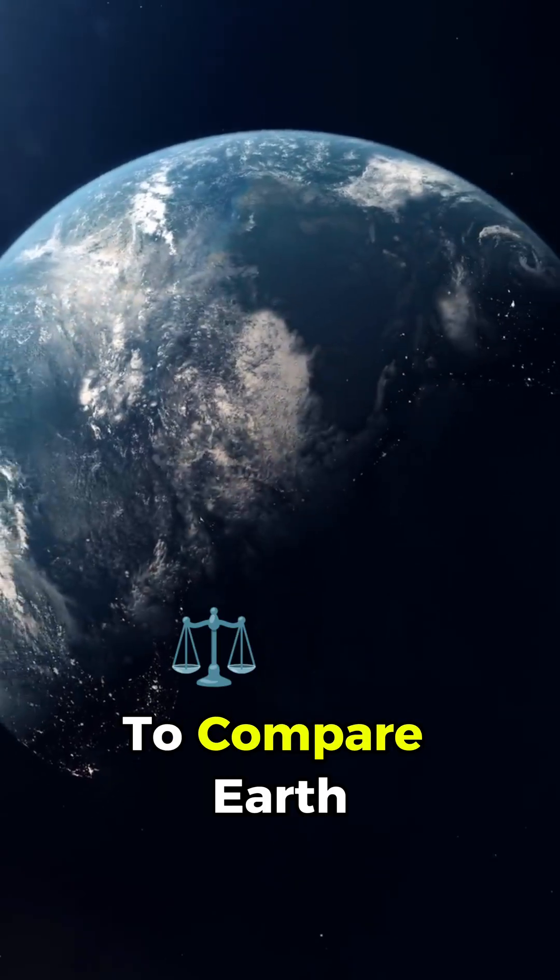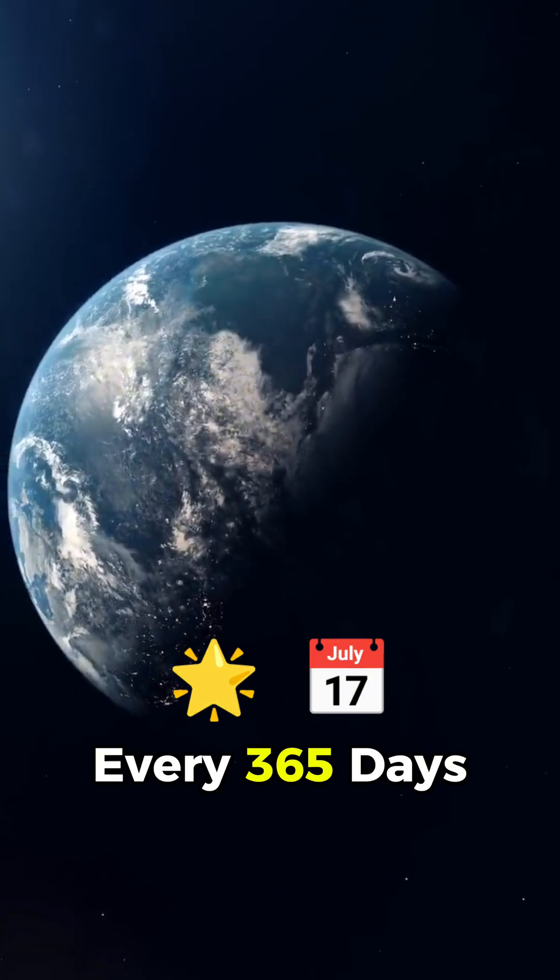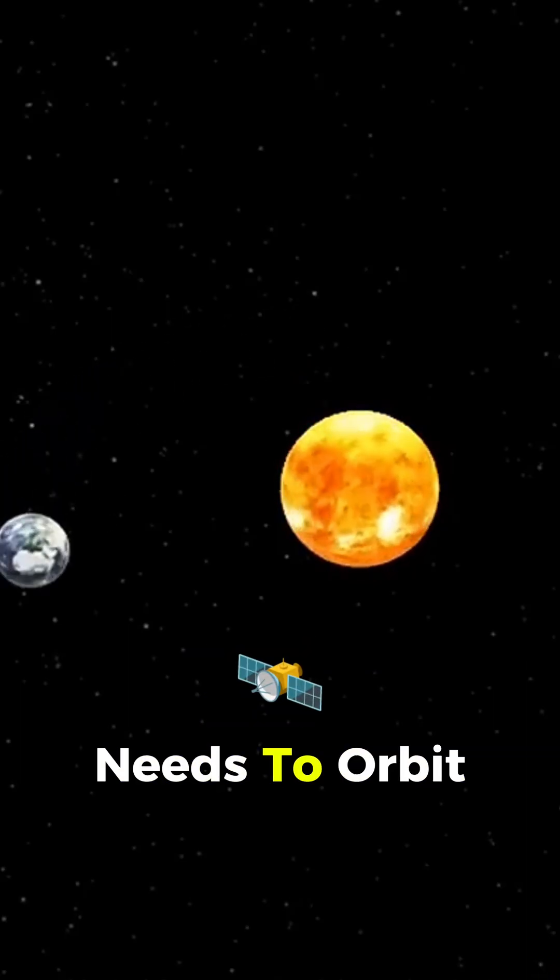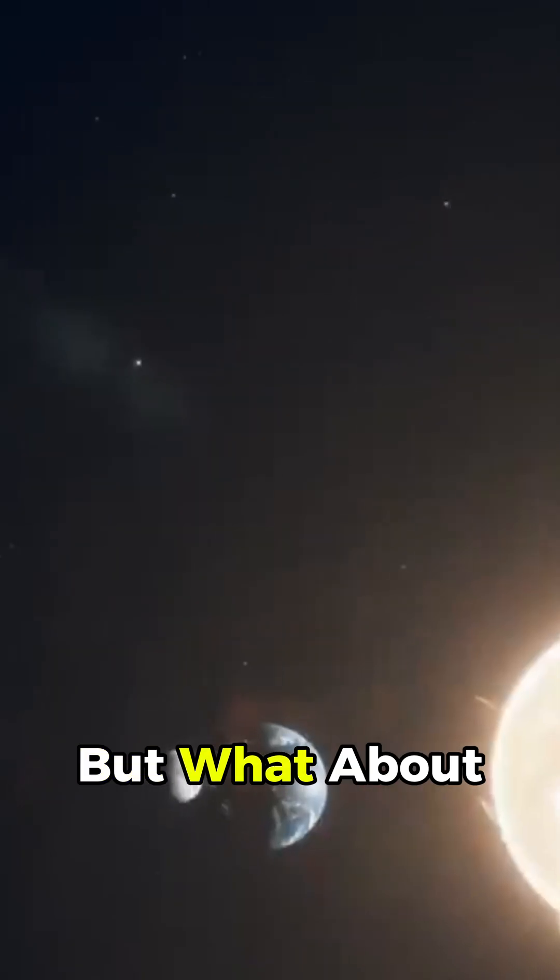To compare, Earth celebrates a birthday every 365 days, the time it needs to orbit the sun once. But what about the sun itself?